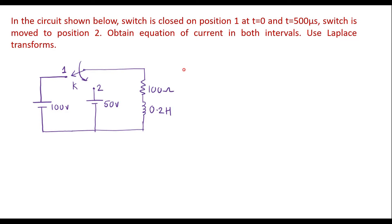In this video, let me consider one example on Laplace transform. In the circuit shown below, the switch is closed on position 1 at t equal to 0, and at t equal to 500 microseconds the switch is moved to position 2. Obtain the equation of current in both intervals using Laplace transform.